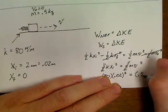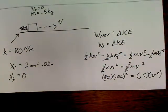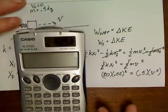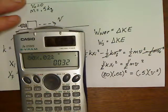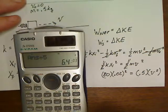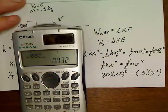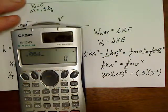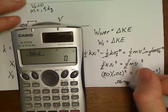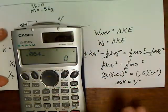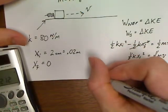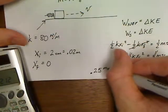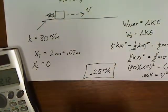This problem is nothing but 80 times 0.02² equals 0.5 times v². So 80 times 0.02² is 0.032, divide by a half, which is times two, so that's 0.064 equals v². Let's take a square root of 0.064: 0.25. So the answer to this question is 0.25 meters per second.